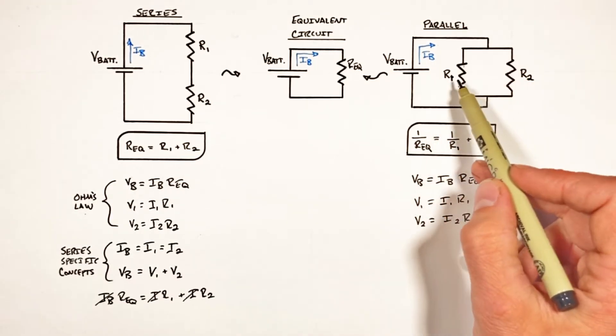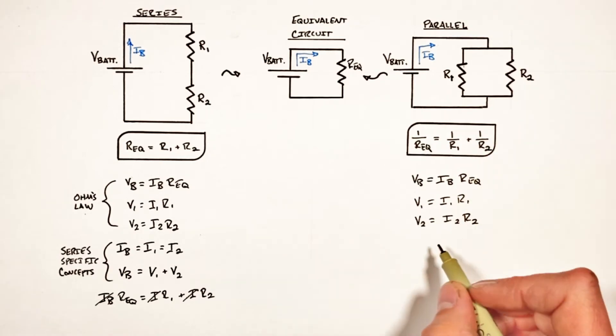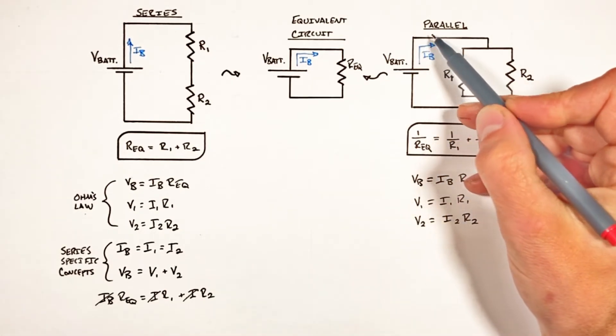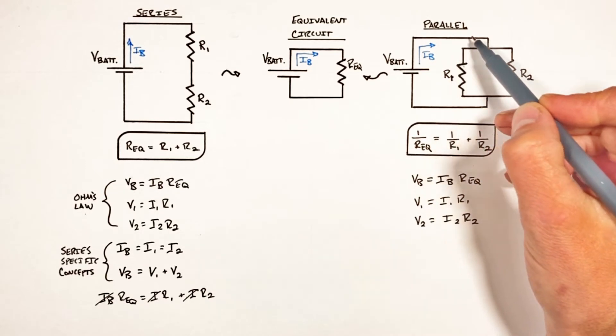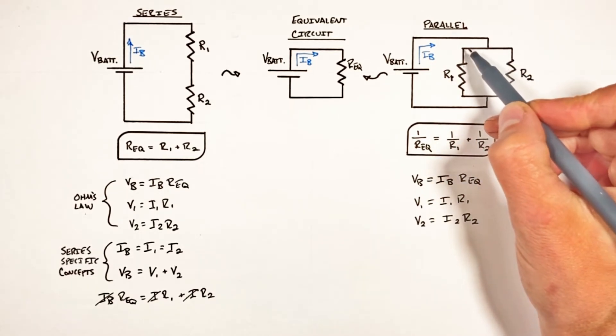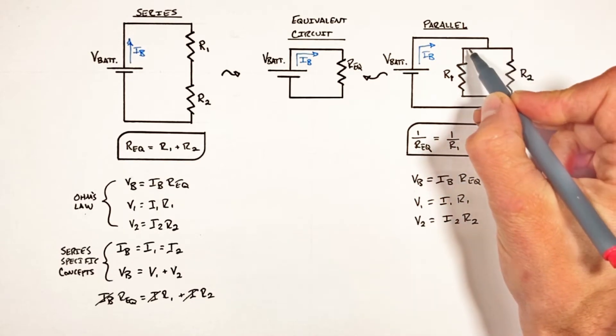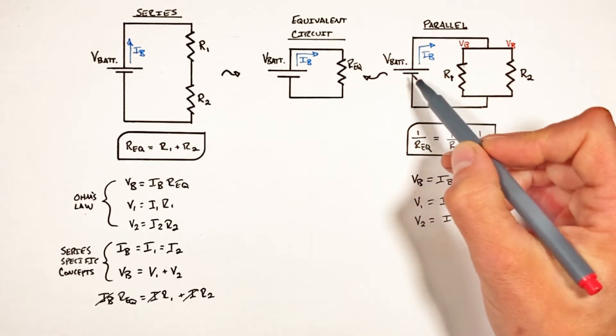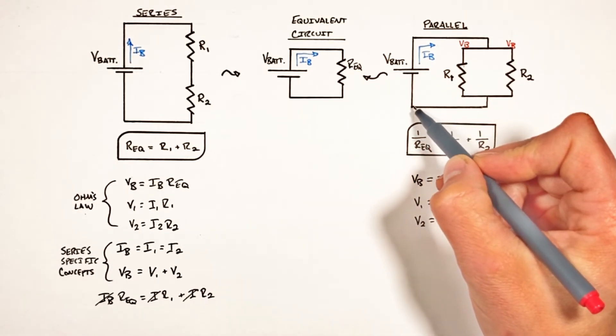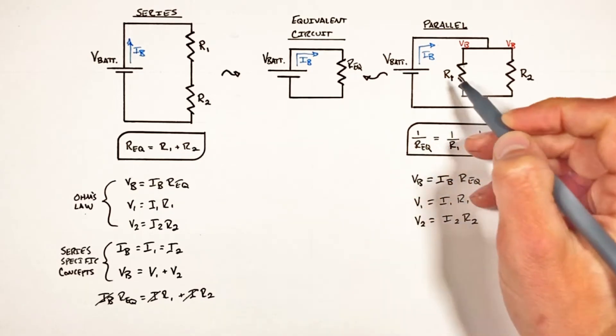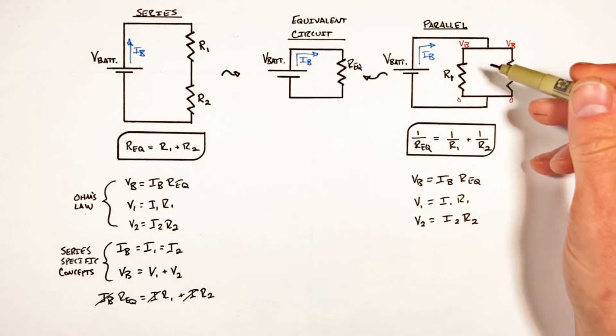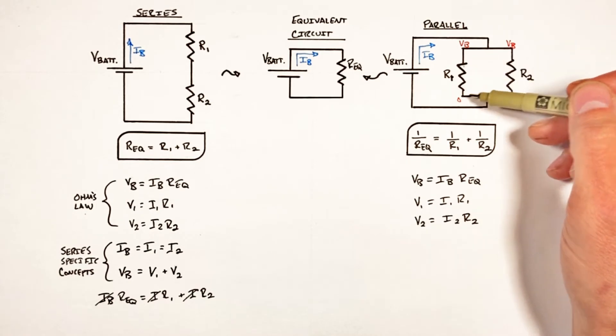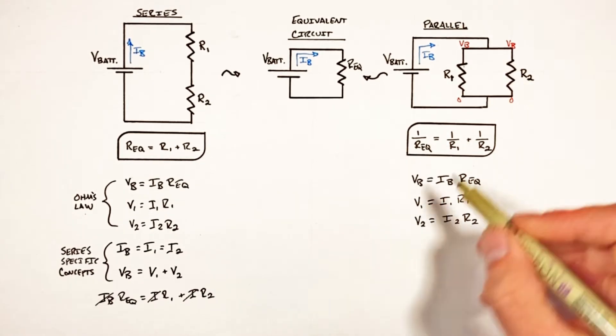But now we need to make our analysis specific to resistors in parallel, and to do that I first want to look at not the current but the voltage in this circuit. See, anytime charge comes out of the battery it has a certain potential, and as charge moves along a wire that potential will not change. So the potential anywhere along this wire up here is going to be the same as the potential at the battery. Working our way out of the negative side of the battery, there's zero potential on the negative side of the battery, which means anywhere over here there's going to be a potential of zero. So looking at the potential across each resistor, you'll notice the potential of the battery is the potential across each of these resistors.